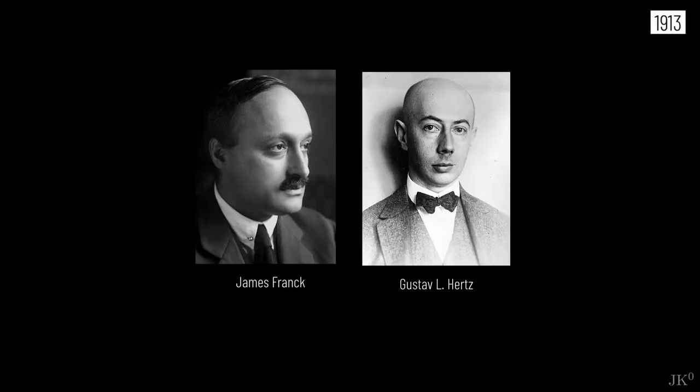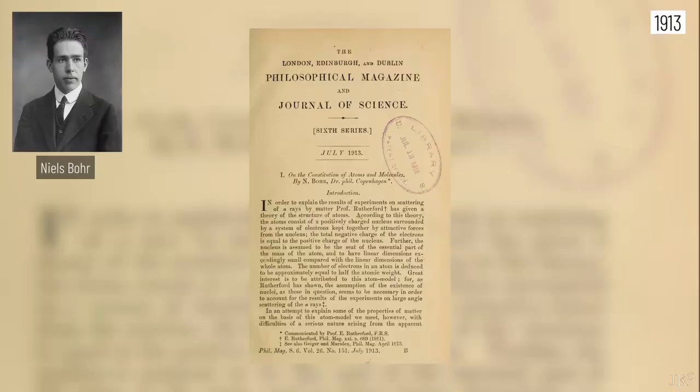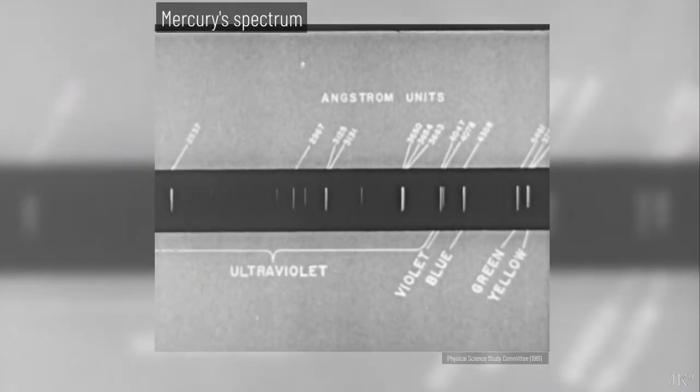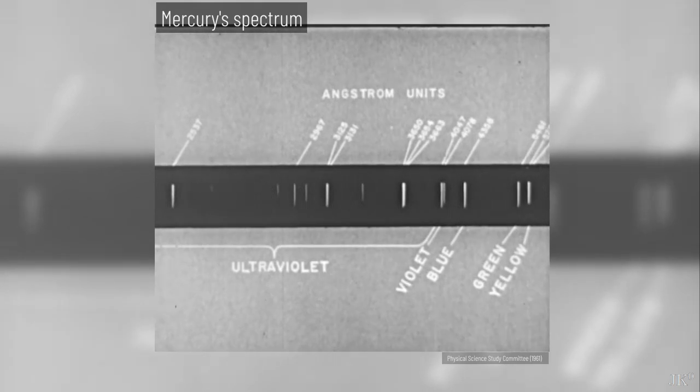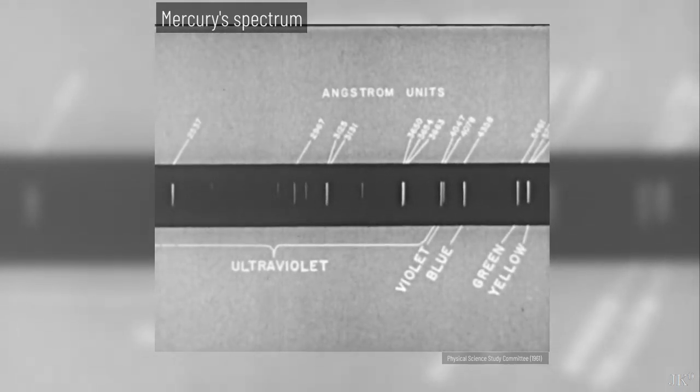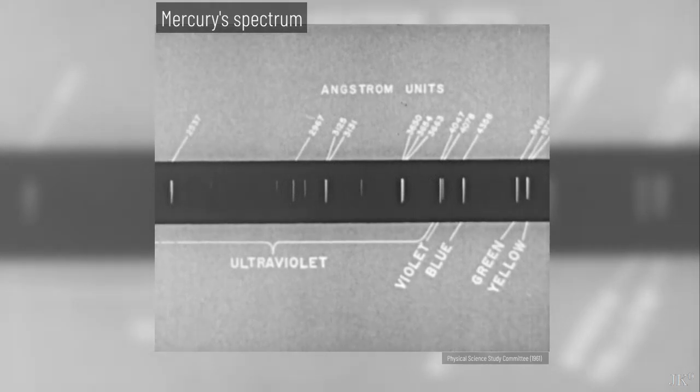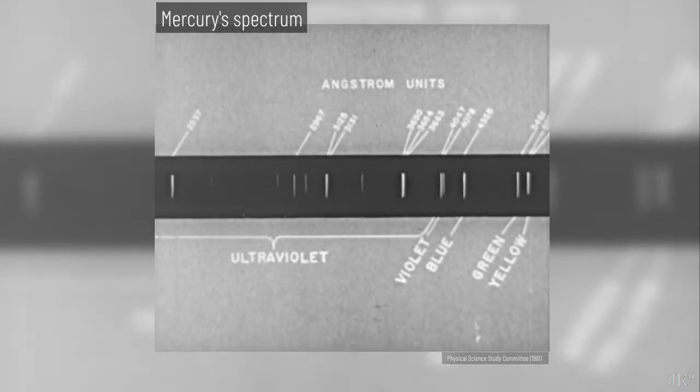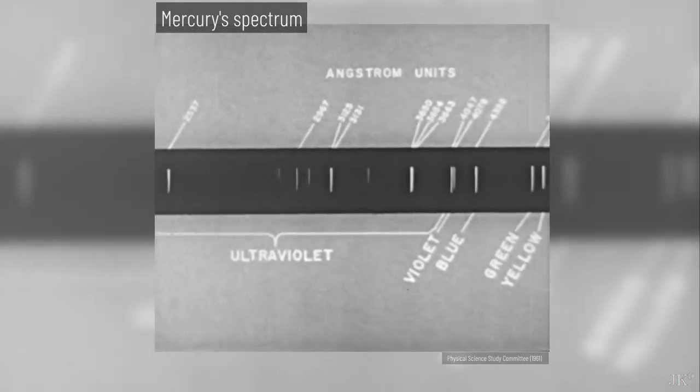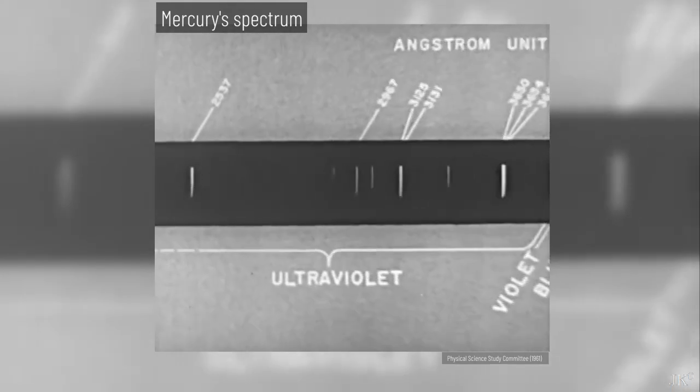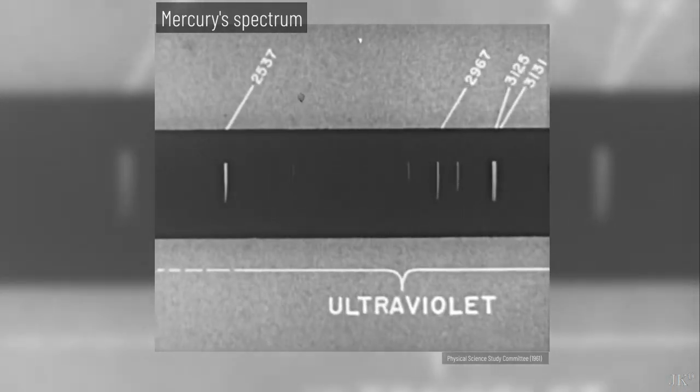These are the calculations that Franck and Hertz did in late 1913. Bohr's atomic model was less than half a year old and not widely known. Spectral lines were still a mystery for many. Franck and Hertz imagined that if they could excite an atom by hitting it with high speed electrons, maybe the atom could borrow energy from the electrons and then give off the excess energy in the form of spectral lines.